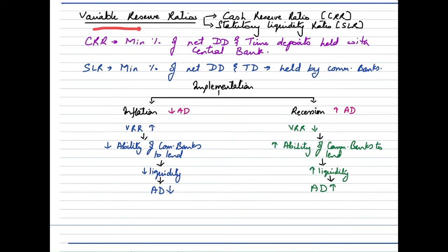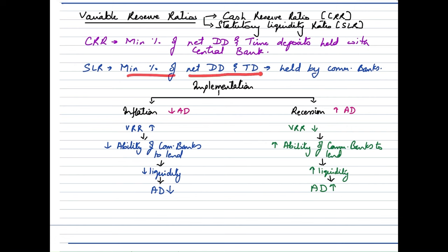The next tool is variable reserve ratios, of which there are two types. The first is the cash reserve ratio (CRR) — the minimum percentage of net demand deposits and time deposits that commercial banks are required to hold with the central bank. The second is the statutory liquidity ratio (SLR) — the minimum percentage of net time deposits and demand deposits that commercial banks hold with themselves. The main purpose is to ensure that all withdrawal requests made by customers of commercial banks are fulfilled in time.